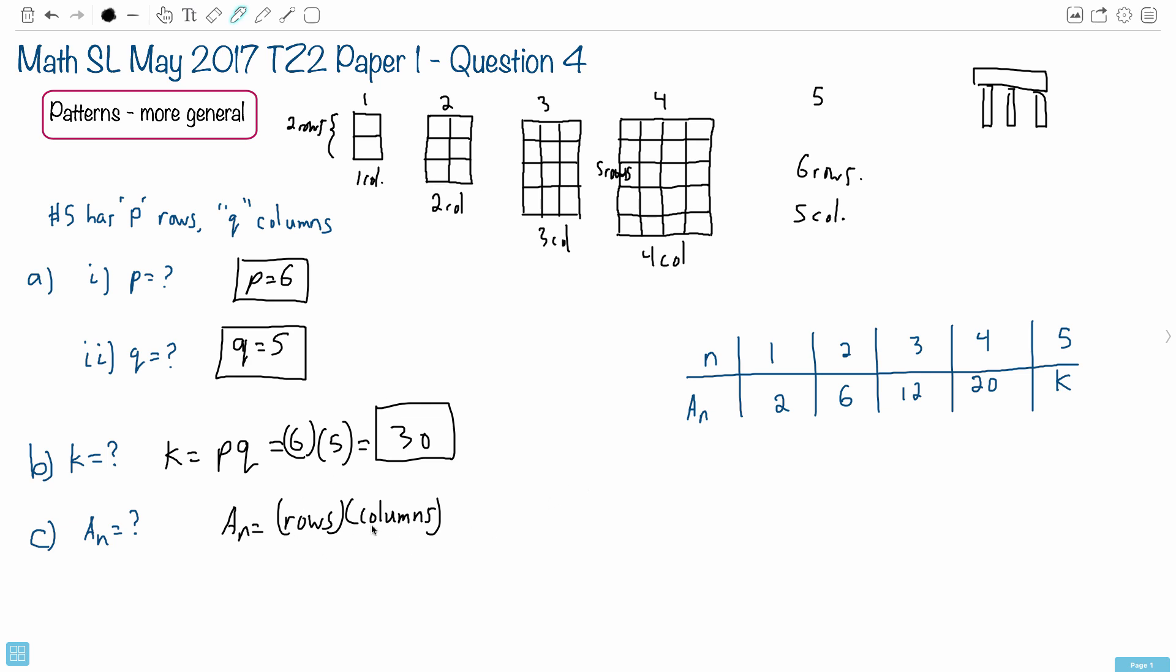The problem is we need this in terms of n. So maybe it helps to take a look at this and see, all right, for n equals 1, how many columns are there and how many rows are there?